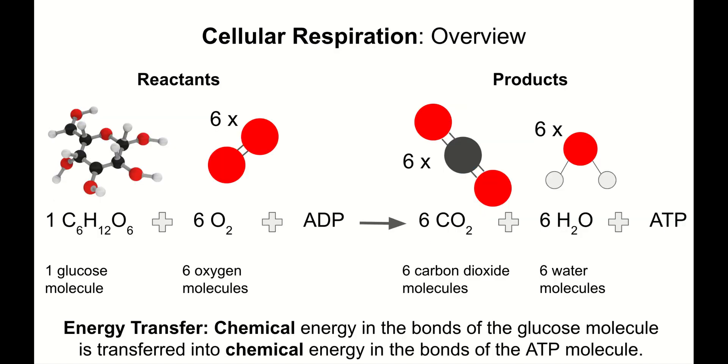So one more time, here's our cellular respiration overview. We need glucose and oxygen and ADP. And when we combine these ingredients in the mitochondria, they're rearranged into carbon dioxide, water, and ATP. And our energy transfer is chemical energy from the bonds of the glucose molecule is transferred into chemical energy in the bonds of the ATP molecule. And that's the process of cellular respiration.